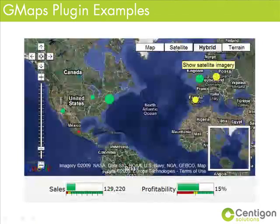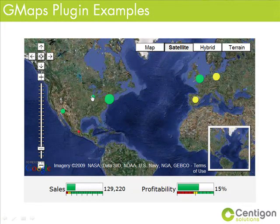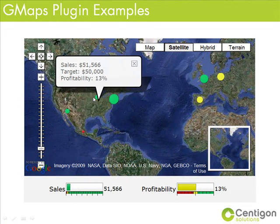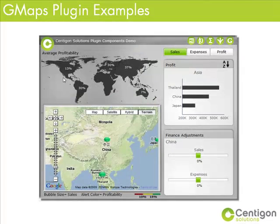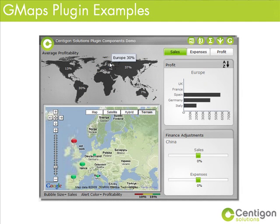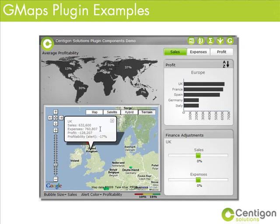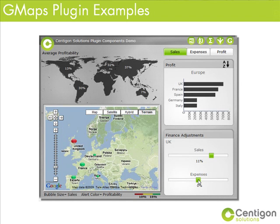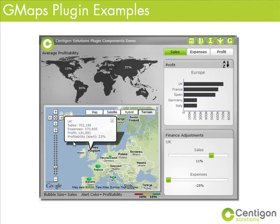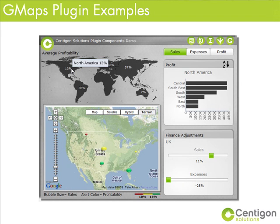Easily create geographical navigation and analysis without writing a single line of code. This dashboard example features a Google Map that empowers a sales manager to visualize profitability and then select a region to drive what-if analysis. Leveraging basic analytic capabilities, the map's icon size indicates sales performance while the alert colors communicate profitability.